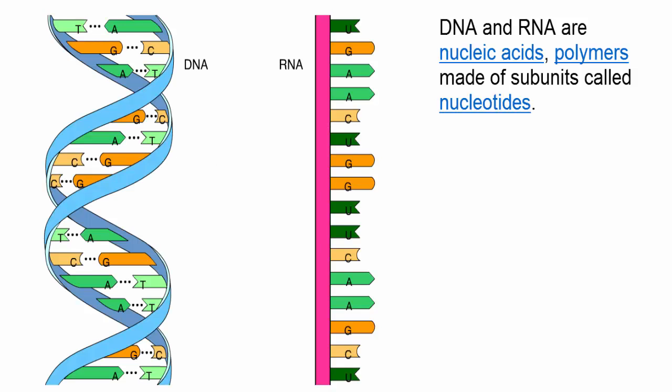DNA and RNA are nucleic acids, polymers made of subunits called nucleotides.